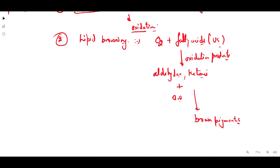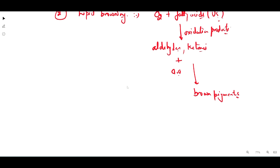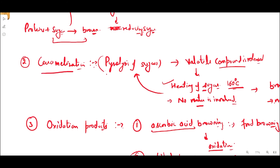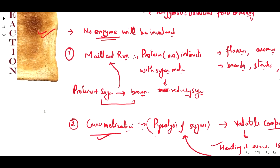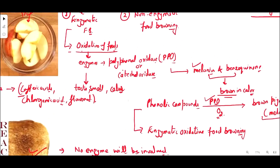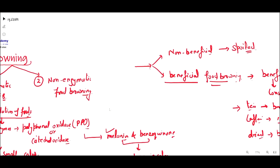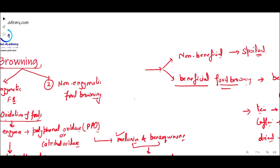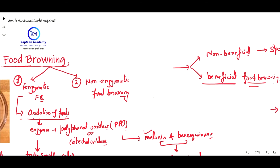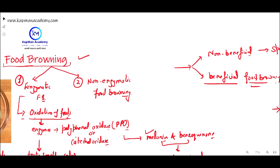These are the very important food browning processes used in the food industry. The Maillard reaction is used for the production of different types of flavors and aromas, and caramelization is also used for flavor production in different food materials. Some reactions lead to food spoilage, and some lead to food quality improvement. That is all about food browning. Thank you.